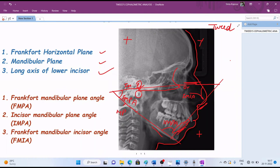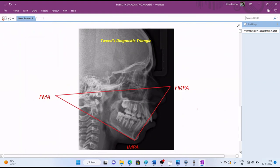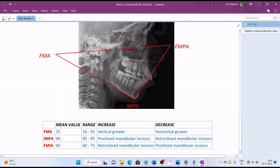Now let's have a look at the mean value and range of these angles, as well as the implications of increase or decrease in these values. First is the FMPA angle or the Frankfurt mandibular plane angle. The mean value of this angle is 25 with the range from 16 to 35 degrees. Any increase in this angle will indicate that the person is a vertical grower, while a decrease will indicate horizontal growth.